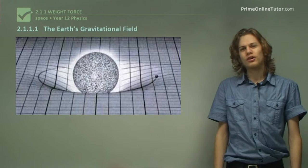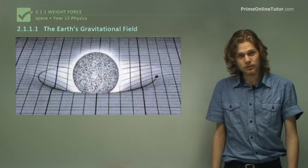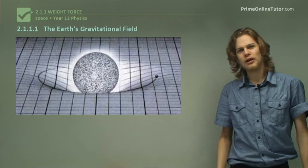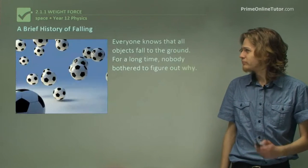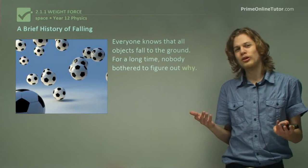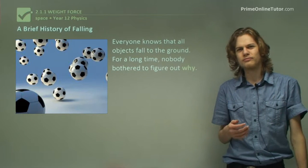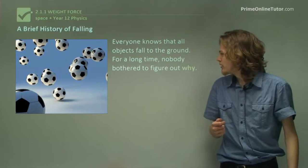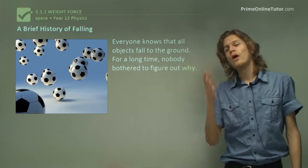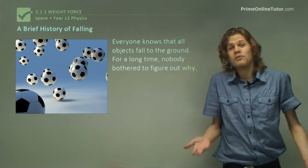The first section we'll be learning about the Earth's gravitational field. So what it looks like, how it varies, how it was discovered and that sort of thing. So everyone knows that objects fall to the ground. You've probably been doing science experiments on this sort of thing since year seven or something. But for a long time people didn't bother trying to figure out why things fell to the ground. It's just something that happened.